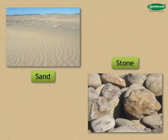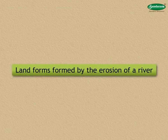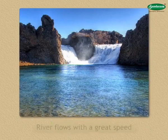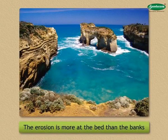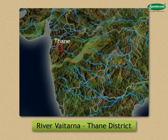Now let us get to know about the landforms formed by the erosion of a river. First, the Gorge. In mountainous areas, a river flows with great speed. Therefore, the bed of the river gets eroded more than its banks. This gives rise to a gorge that has steep banks and a narrow bed. For example, the gorges of river Vaitarna in Thane district and river Ulhas in Raigarh district.